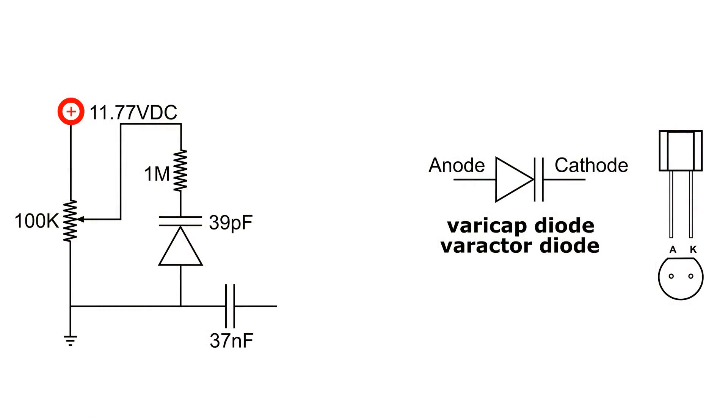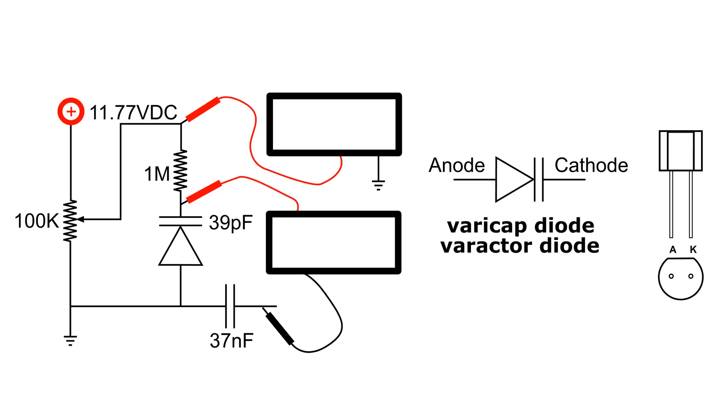I'm going to be looking at this circuit with two meters. The top meter is a voltmeter and it's connected at the center tap of the variable resistor to ground.